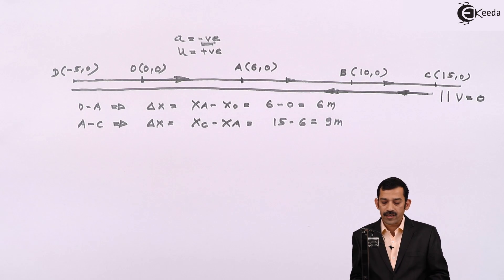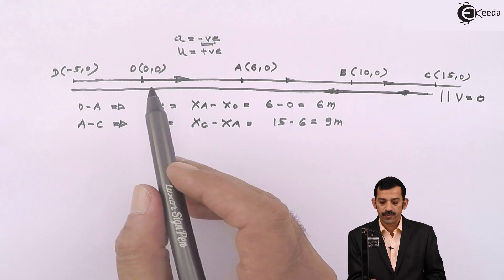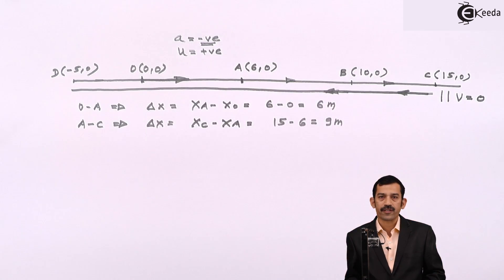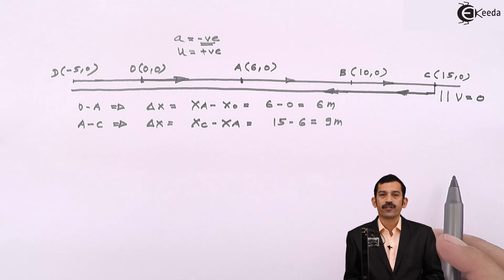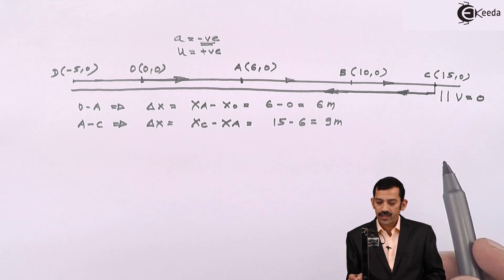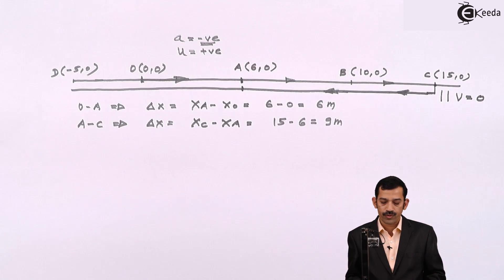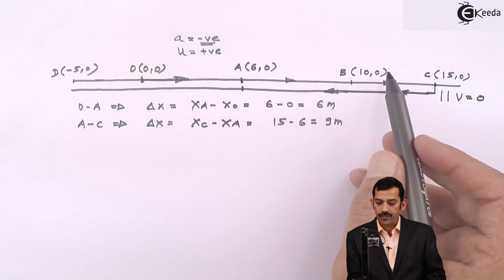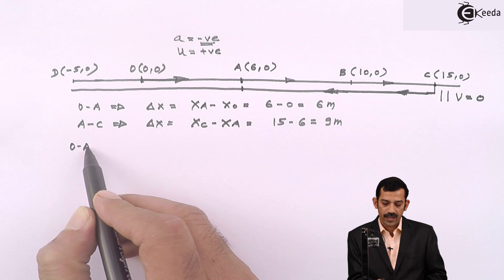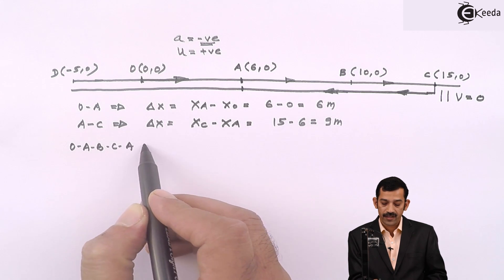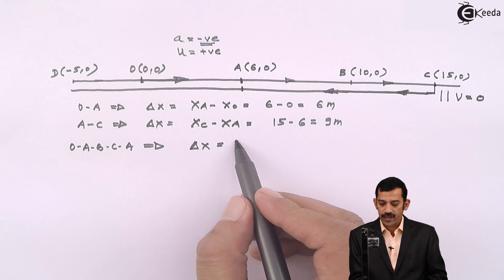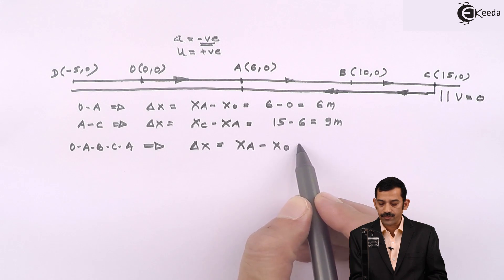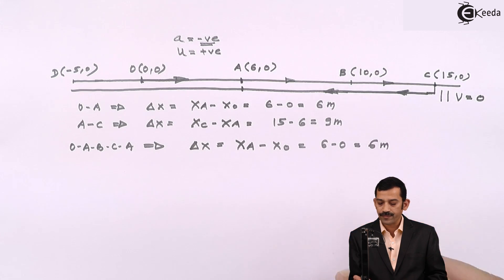If the particle starts from O with initial velocity, moves rightward through A, B, and at C its velocity becomes zero, it reverses direction. If it then passes back through point A, the displacement is still final position minus initial position: X_A − X_O = 6 − 0 = 6 meters. If it returns to O, displacement is 0 − 0 = 0. If it continues to point D at (−5), displacement = −5 − 0 = −5 meters.